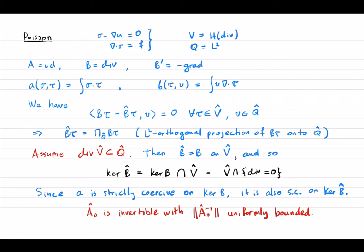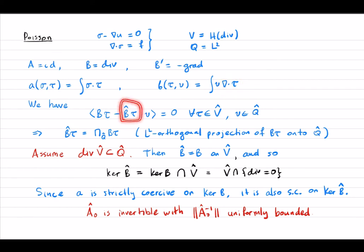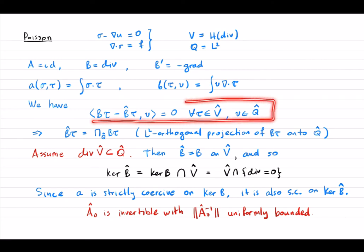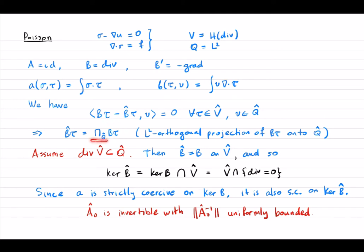In terms of bilinear forms, the bilinear form a is simply the L2 inner product, and the bilinear form b integrates a scalar function v against the divergence of the vector variable tau. By the definition of B-hat, for all tau in V-hat and all v in Q-hat, B-hat is actually B followed by the L2 orthogonal projection onto Q-hat.